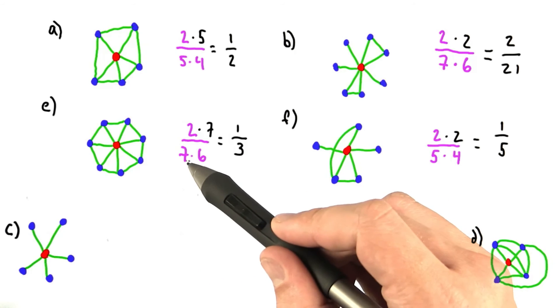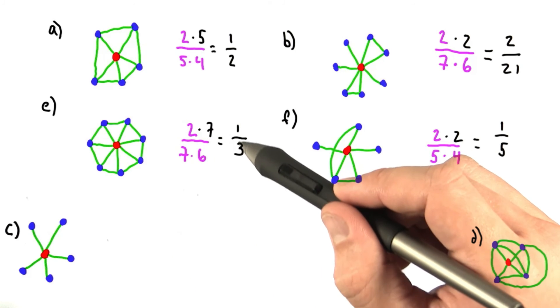And for E, the degree of the red node is seven, and there are seven links between its neighbors. So the clustering coefficient is one-third.